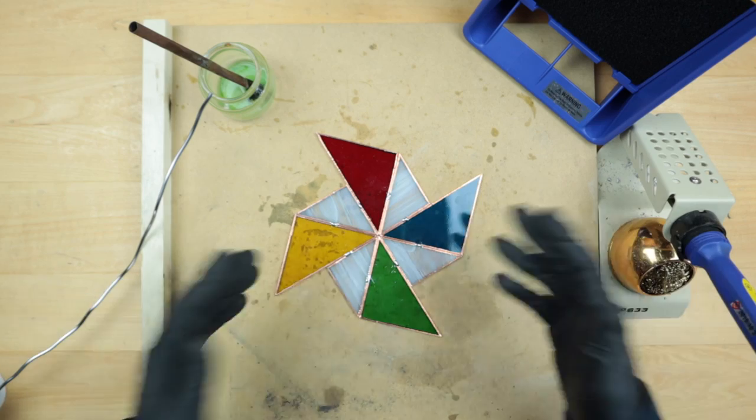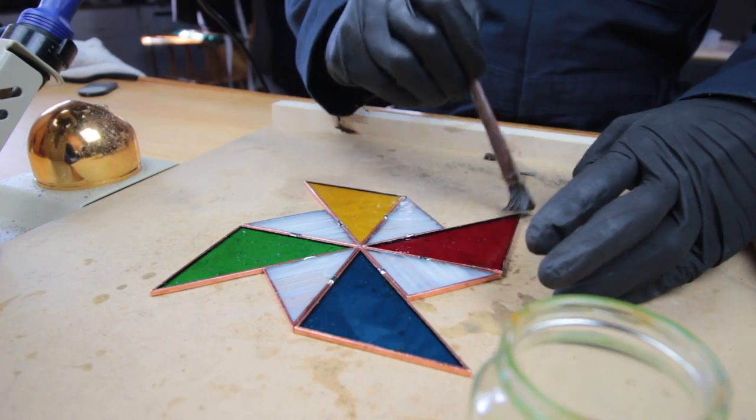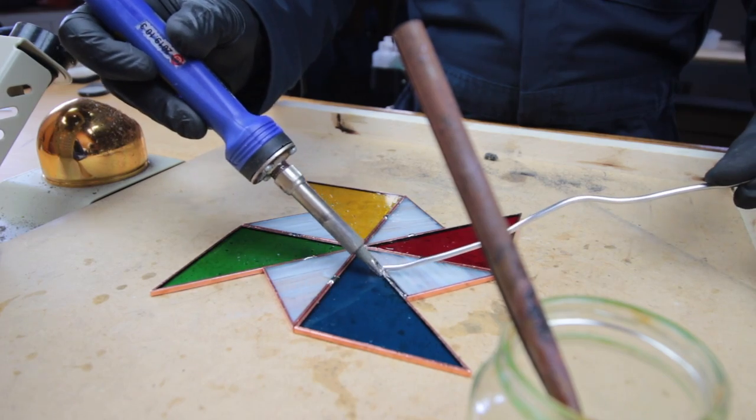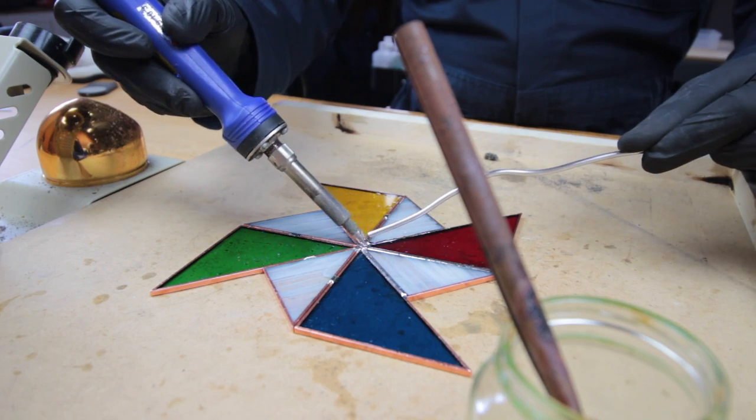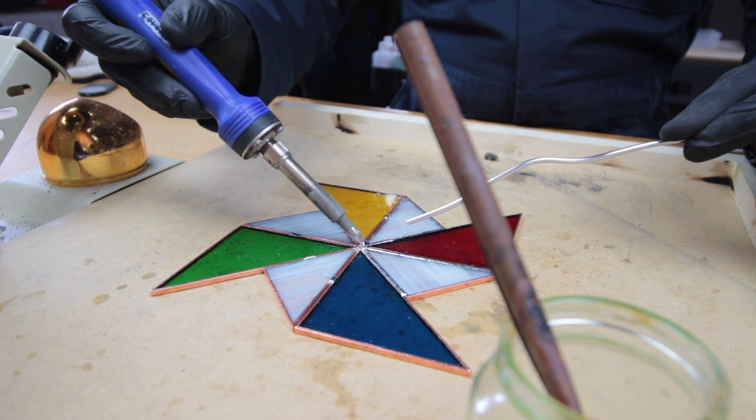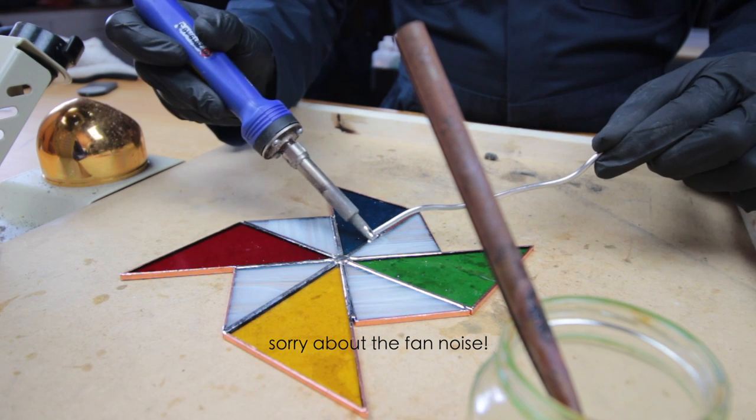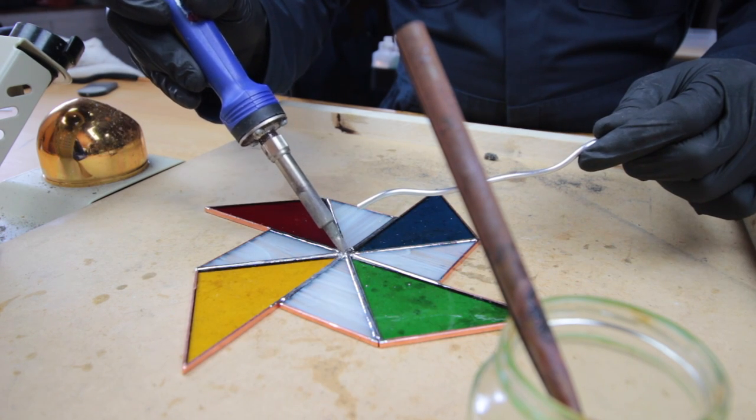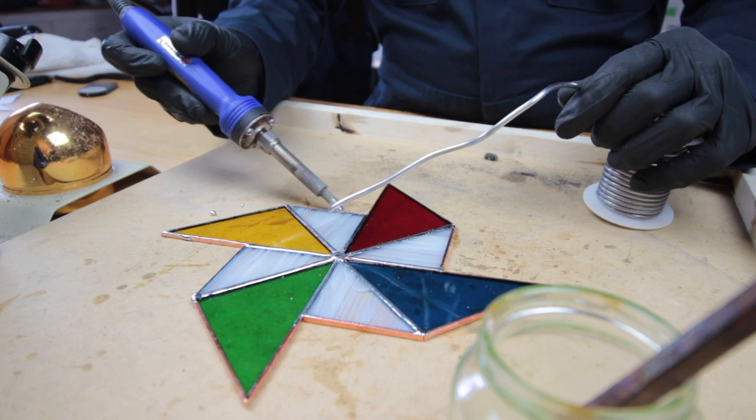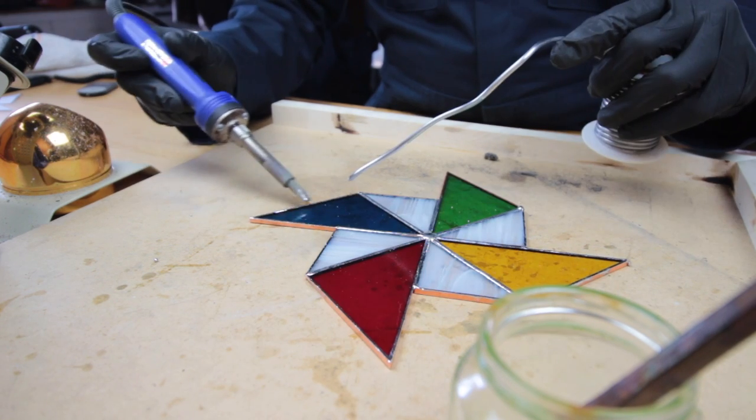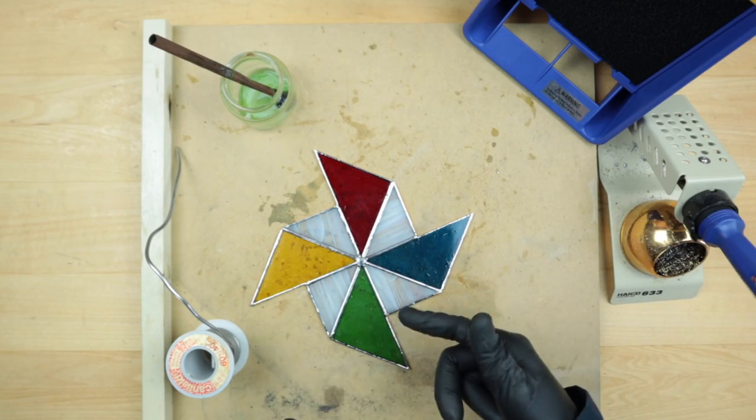All right, everything is held together to add some more flux and then more solder to this top surface. We've got one side done. Let's go ahead and flip it over and do the same thing on the other side.